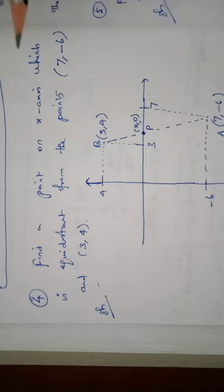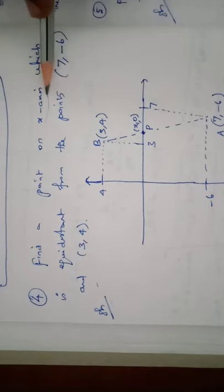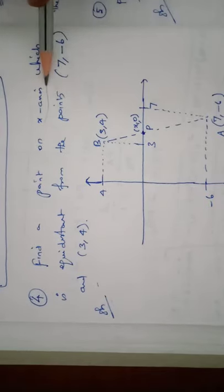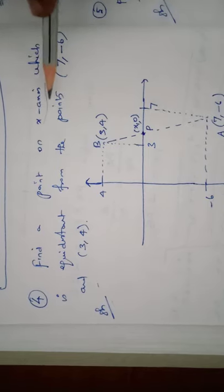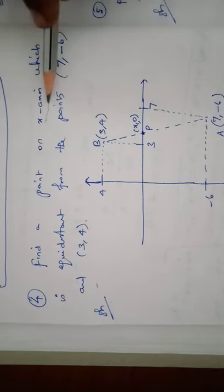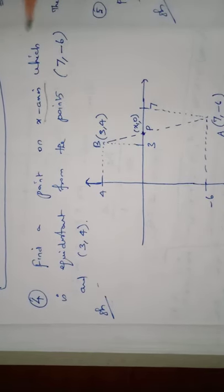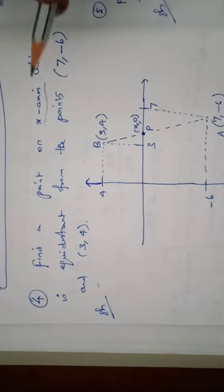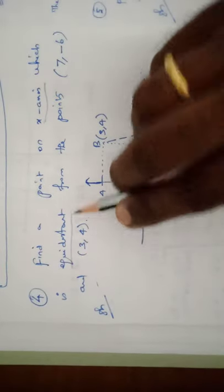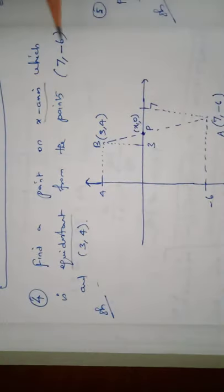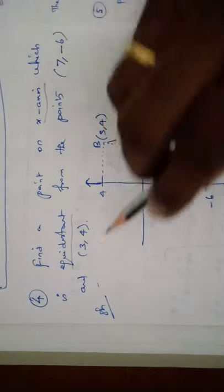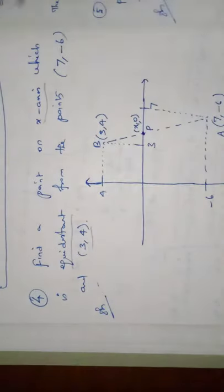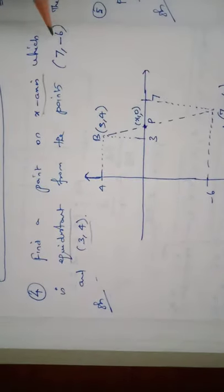Reading the problem: find a point on the x-axis. When the point is on the x-axis, y equals 0. We need to find the point which is equidistant from the points (7, -6) and (3, 4).